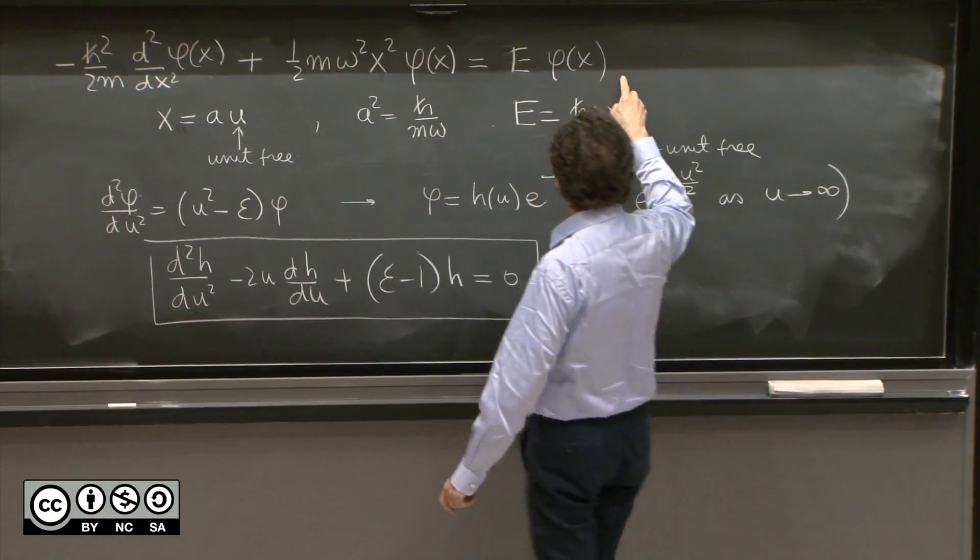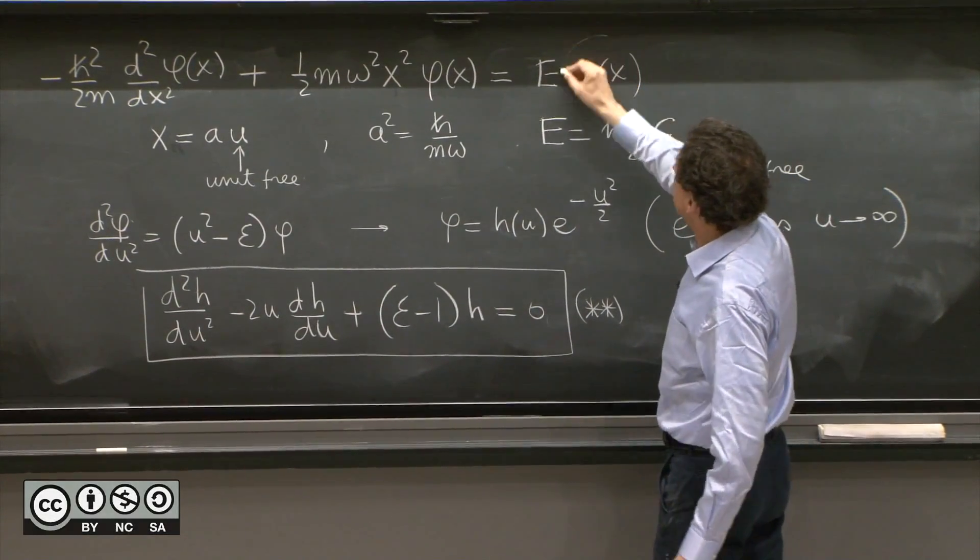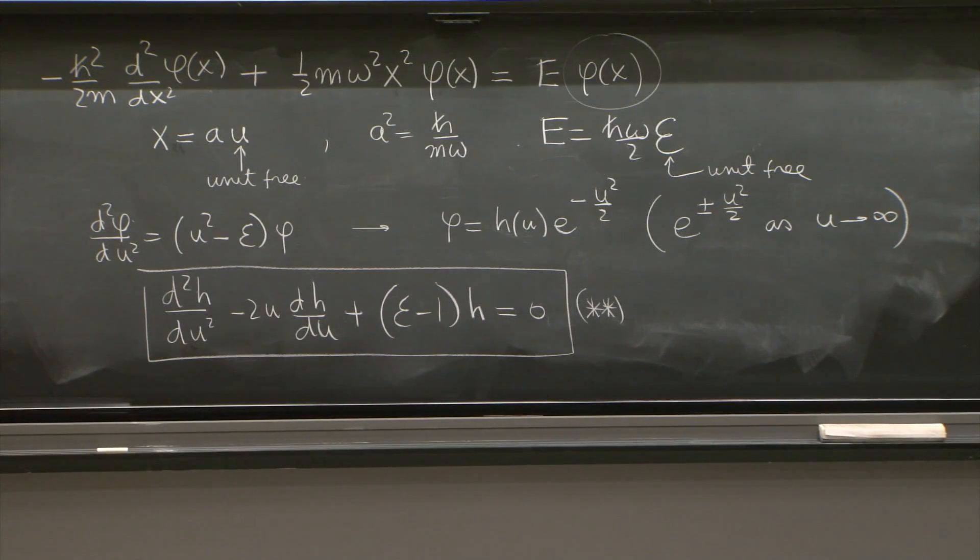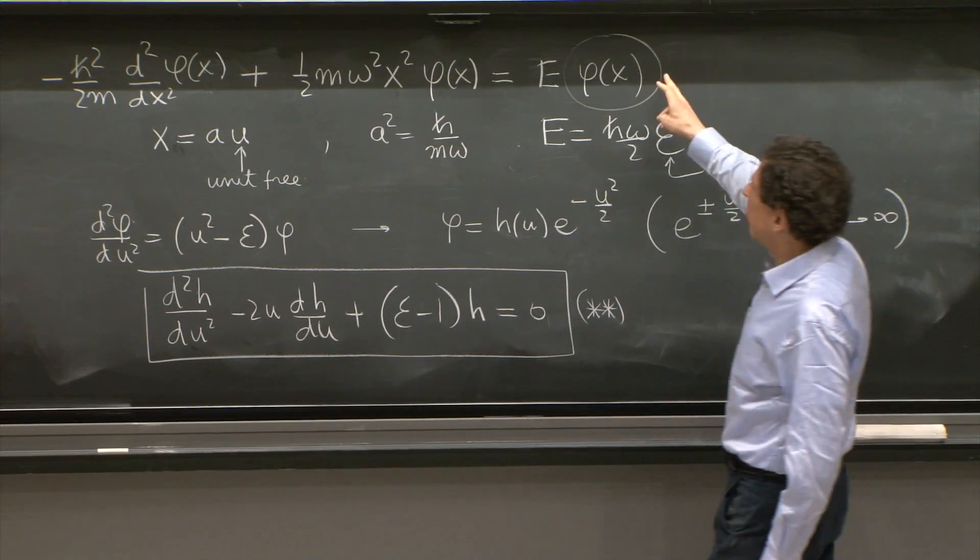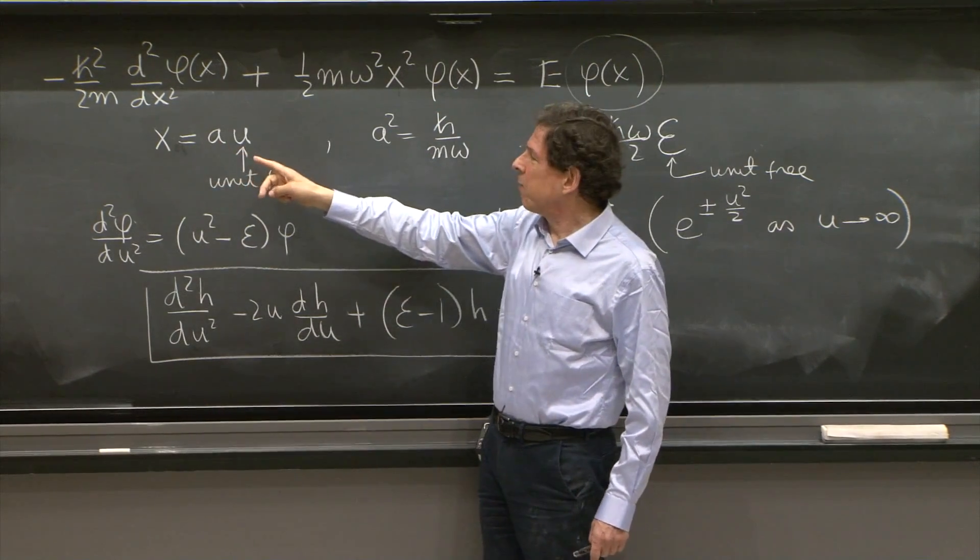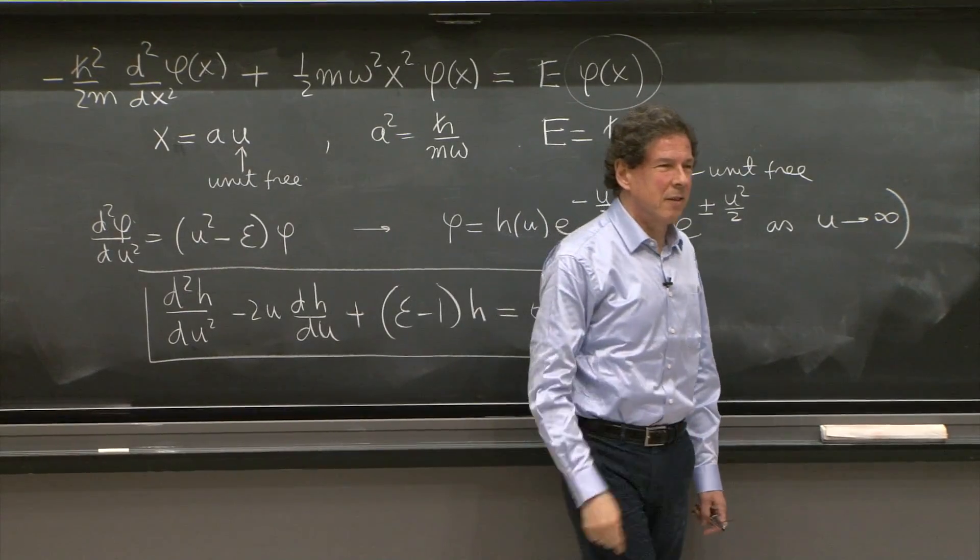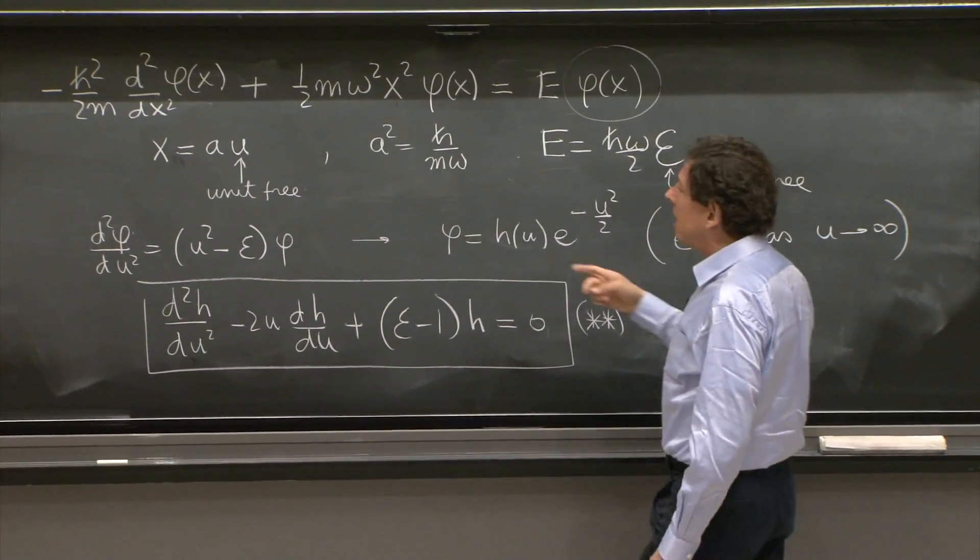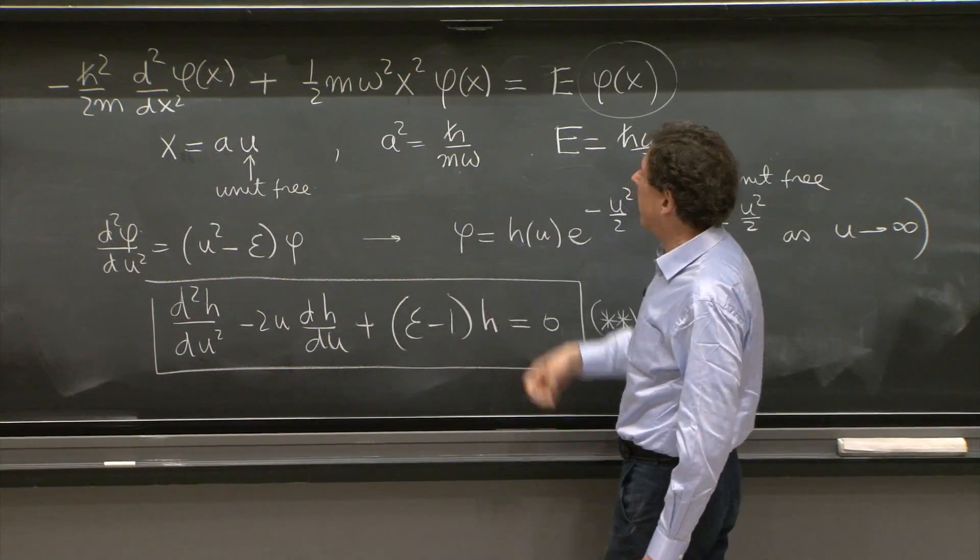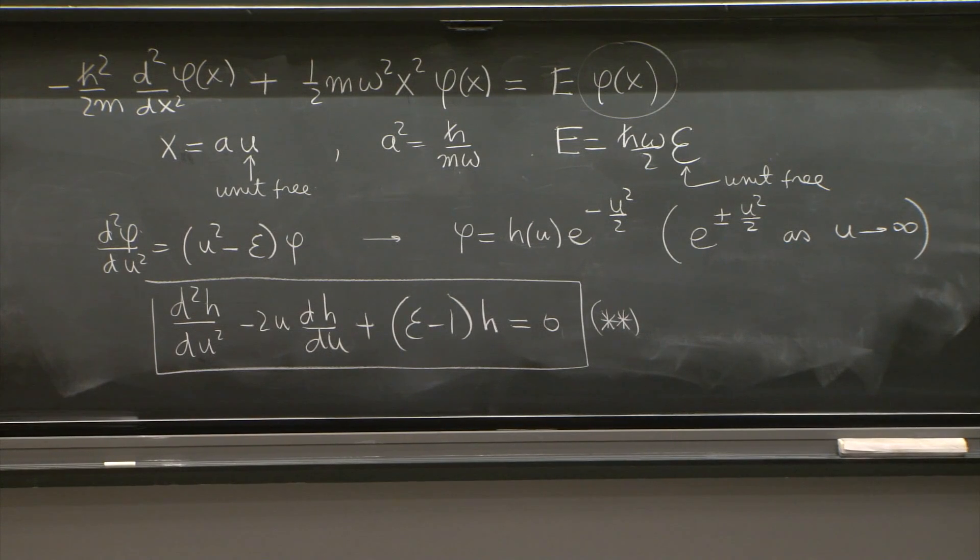And this was the differential equation for the energy eigenstates phi, supposed to be normalizable functions. We looked at this equation and decided we would first clean out the constants. We did that by replacing x by a unit-free coordinate, u. For that, we needed a constant that carries units of length. And that constant is given by this combination of the constants of the problem, h bar m and omega, the frequency of the oscillator.